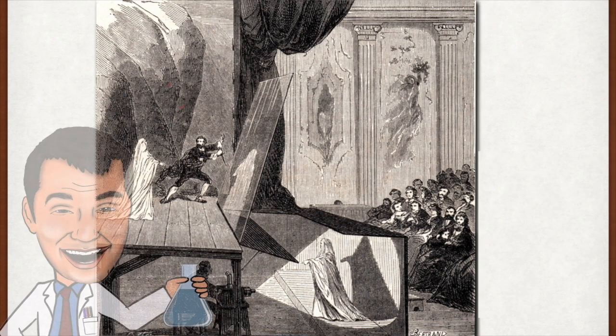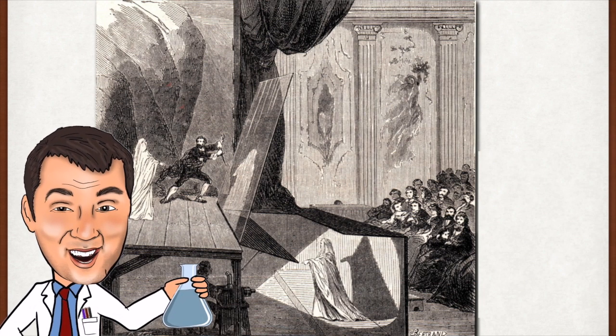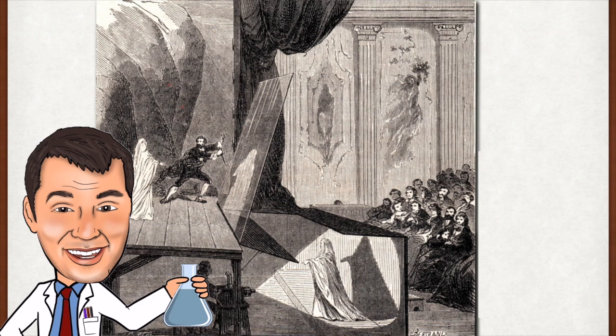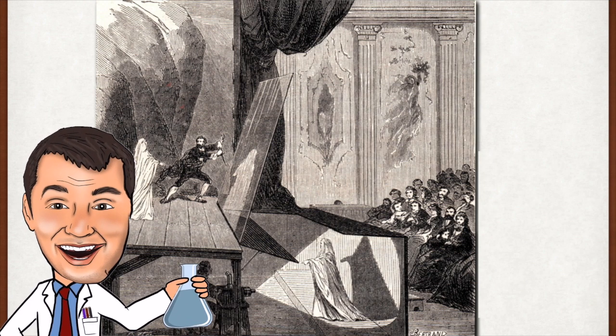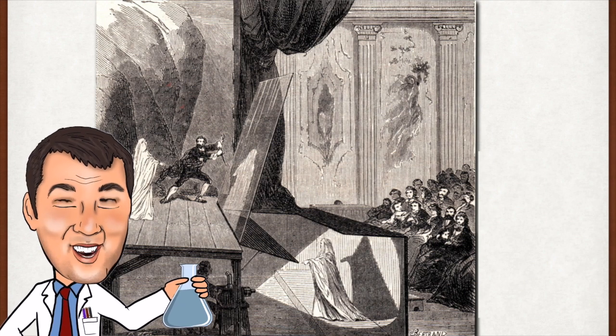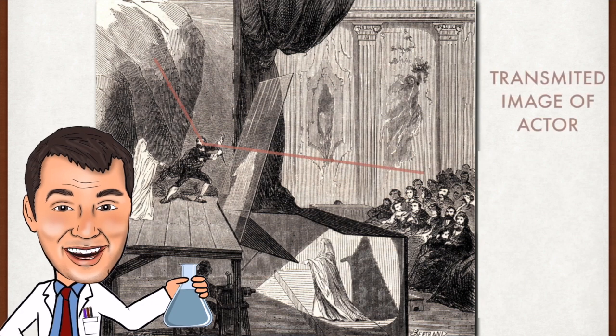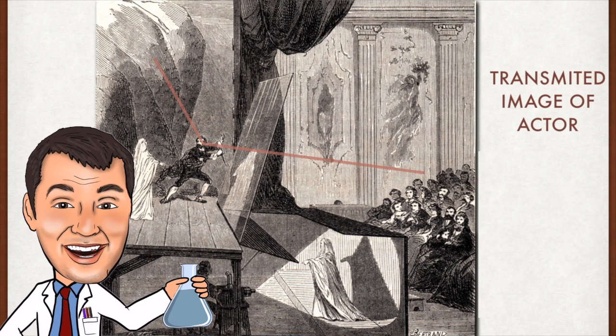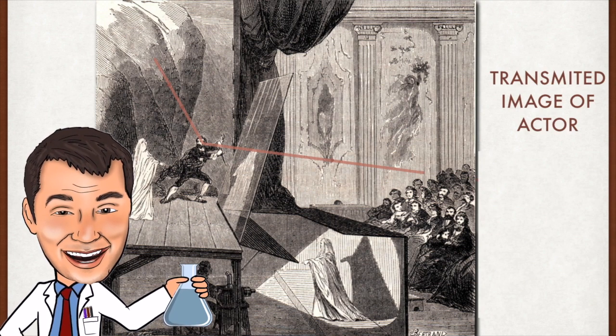Take a look at this picture of Pepper's Ghost. You can see the audience over to the right and the pane of glass which is reflecting the image of the ghost. So what's fairly obvious is that the audience can see the actor. And the reason the audience can see the actor is that light is transmitted through the pane of glass. Light which is bouncing off the actor is transmitted through the pane of glass and therefore the audience can see him.